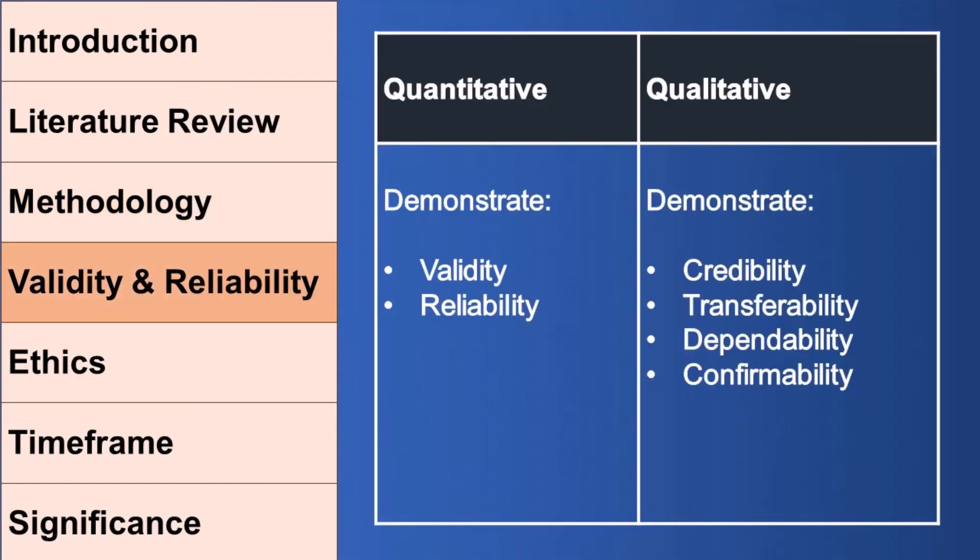The next section after completing the methodology is your validity and reliability section. In quantitative research, we call this validity and reliability. In qualitative research, those terms don't really fit, so we usually follow the structure of discussing credibility, transferability, dependability, and confirmability. This is quite difficult and confusing, so I'll show you a way to find some ideas to cover for both quantitative and qualitative research.